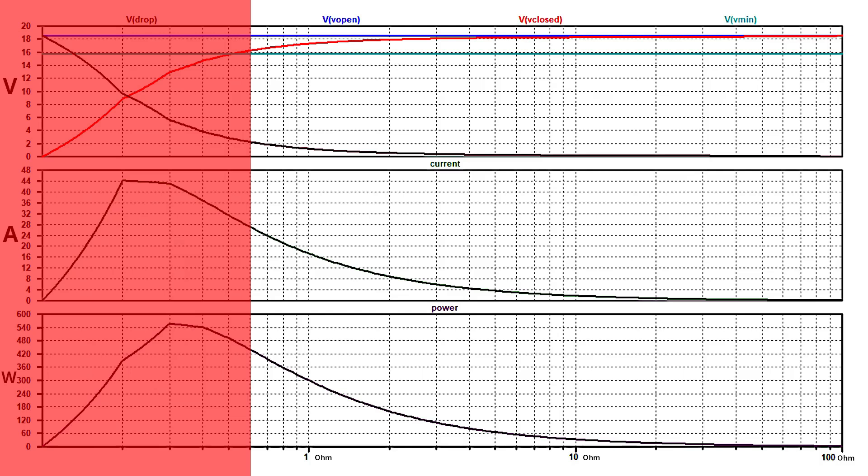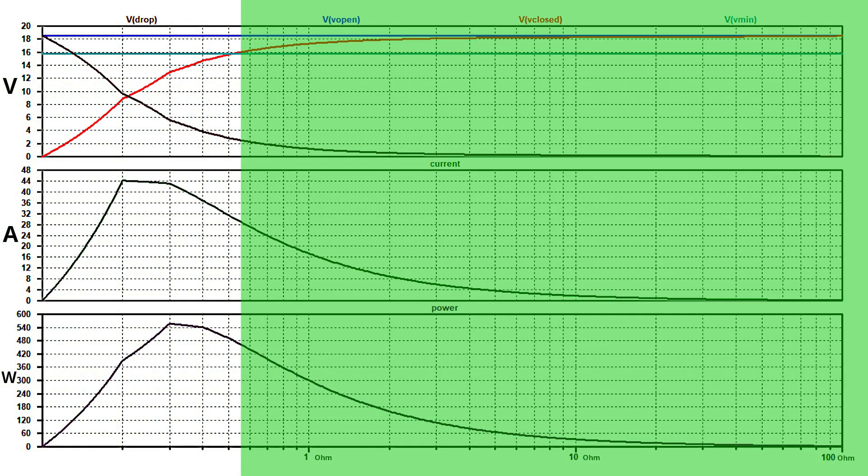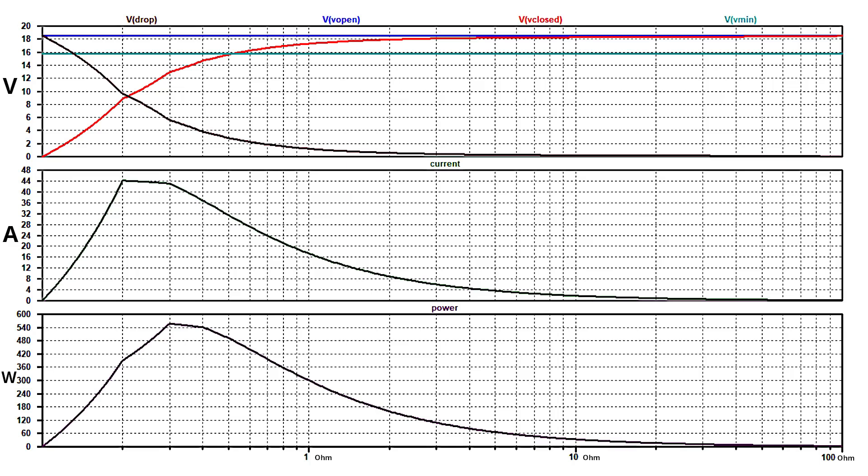Conversely, the safe operating region is indicated. The maximum current that the transformer can safely deliver is approximately 30 amperes, corresponding to a power output of 480 watts.